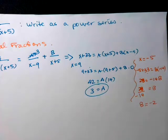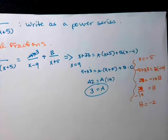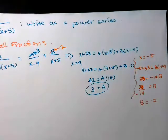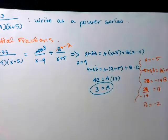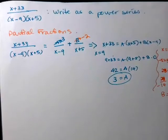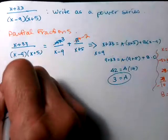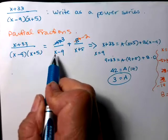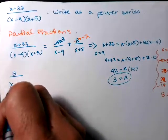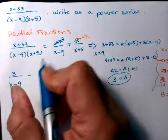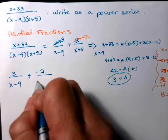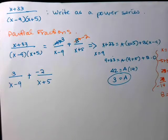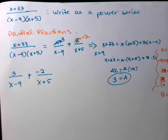Usually if one of them's an integer, the other one's going to be an integer. Not always, it's not set in stone, I don't think. But I was just a little nervous that it wasn't going in nicely. Okay, and that caused me to check my arithmetic. All right, so what I just found is that x plus 33 over x minus 9 times x plus 5 is equivalent to 3 over x minus 9 plus, or minus, I'll do plus negative 2 over x plus 5. Sweet. Okay, now how do I go from here to writing a power series?